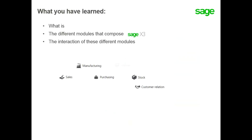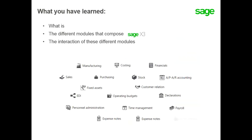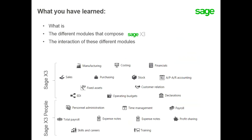You have now learned what a business management solution is and how Sage X3 is a powerful integrated enterprise management software designed to support all business processes within organizations. You have also learned about the major end-to-end integrations available and add-ins.